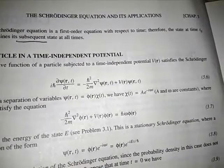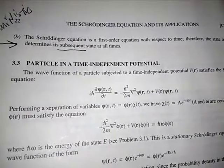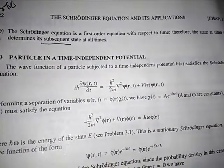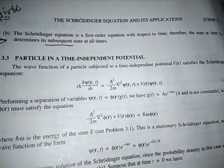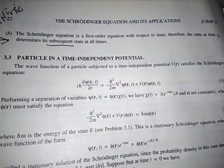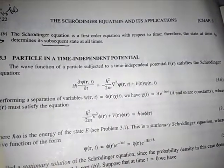The state at time t zero determines the subsequent state at all times. That pretty much confirms that Schrodinger's equation is a deterministic equation.